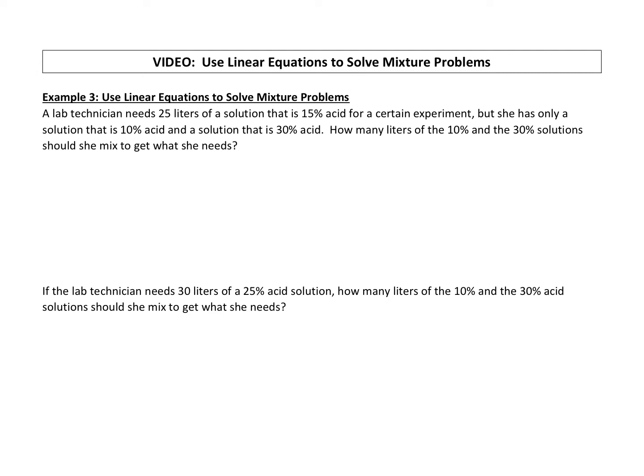So she doesn't have what she needs, but she's got a 10% acid solution and a 30% acid solution, and she needs to figure out how much of each one should she put together to get that 25 liters of a 15% acid solution. Okay, so let's look at it.